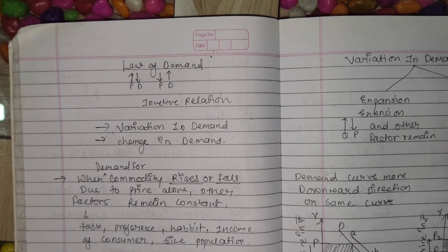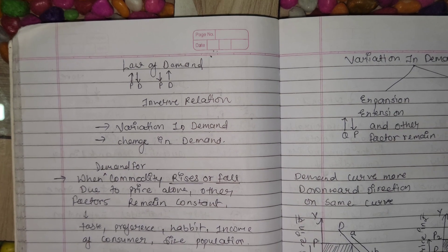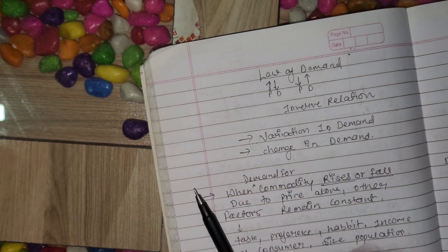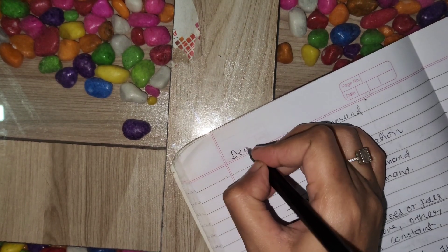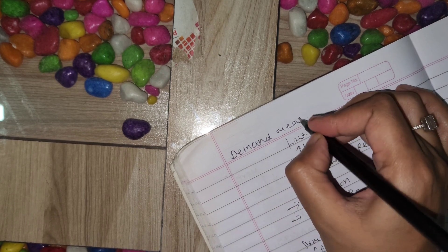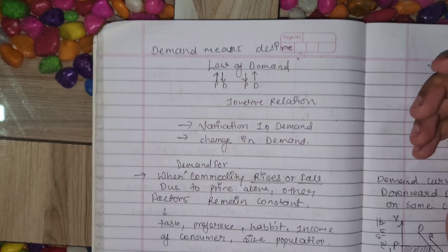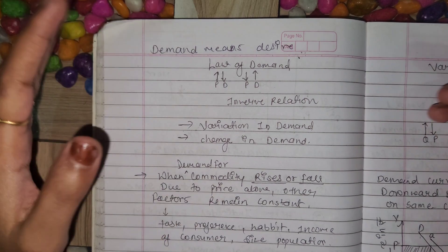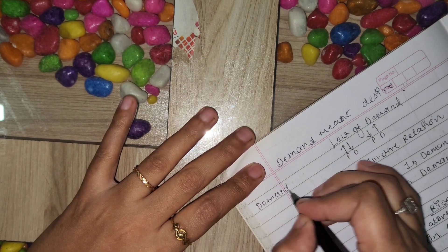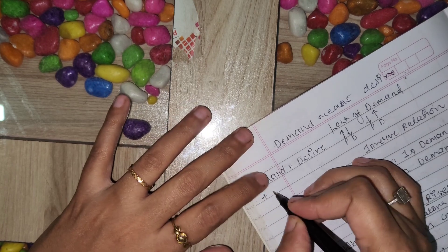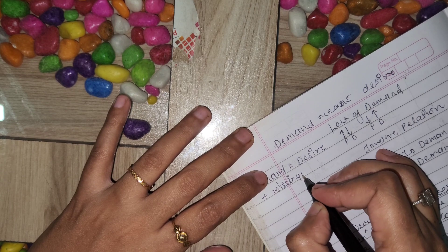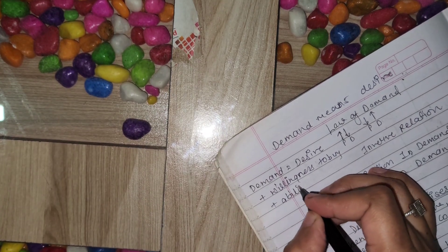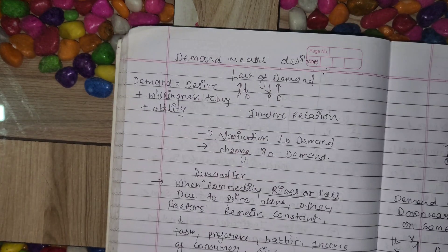Hey everyone, welcome back to my channel. Today we are going to discuss a very important topic: variation in demand and change in demand. Before we start, we need to understand what demand is. Demand means desire — in other words, the wish to have something. In economic terms, demand equals desire plus willingness to buy plus ability to purchase.